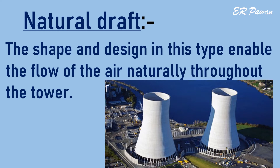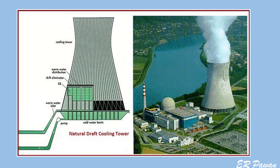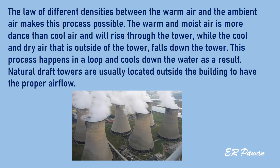Natural draft: the shape and design in this type enable the flow of air naturally throughout the tower. The law of different densities between the warm air and the ambient air makes this process possible. The warm and moist air is less dense than cool air and will rise through the tower, while the cool and dry air outside the tower falls down. This process happens in a loop and cools the water as a result. Natural draft towers are usually located outside the building.